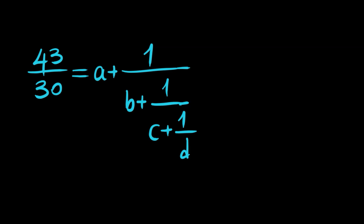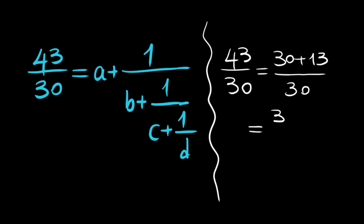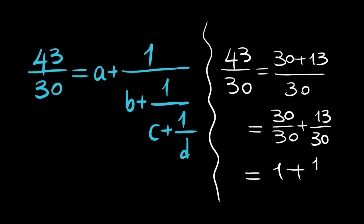The left hand side is 43 divided by 30. We begin by writing 43 divided by 30 as 30 plus 13 divided by 30, which equals 30 divided by 30 plus 13 divided by 30, and that is 1 plus 13 divided by 30. So we can say a is equal to 1.